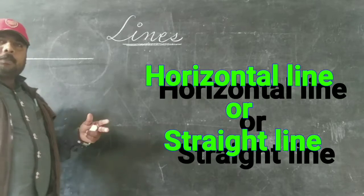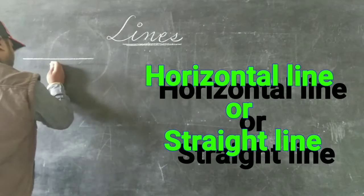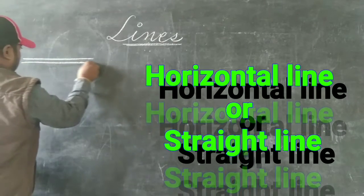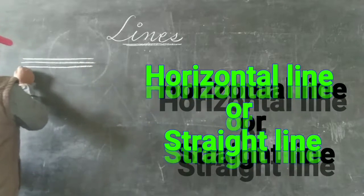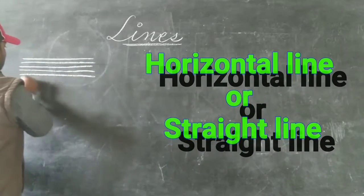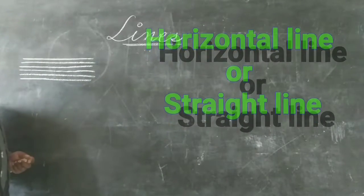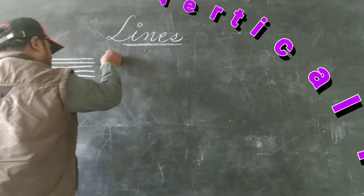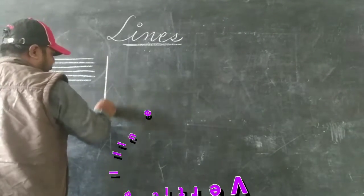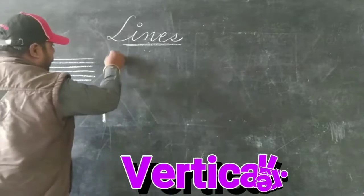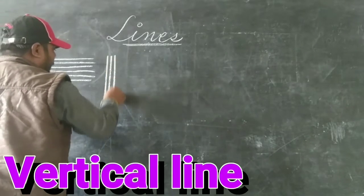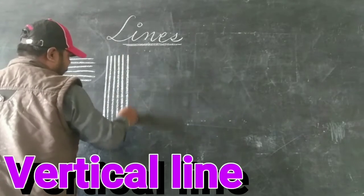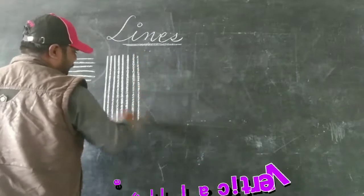So what is the name? First I said it is a line, horizontal line, straight line — we can say like that. This one is also a vertical line. What line is it? Vertical line.